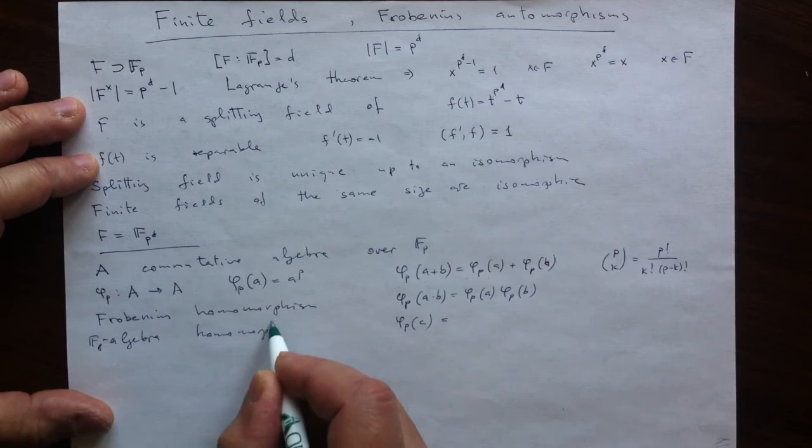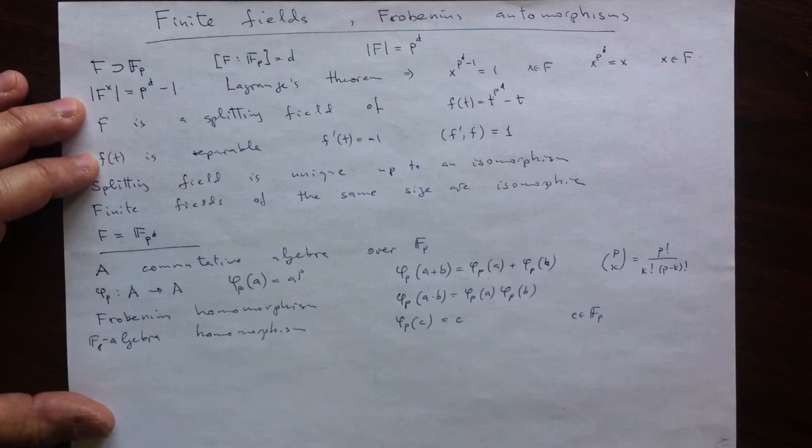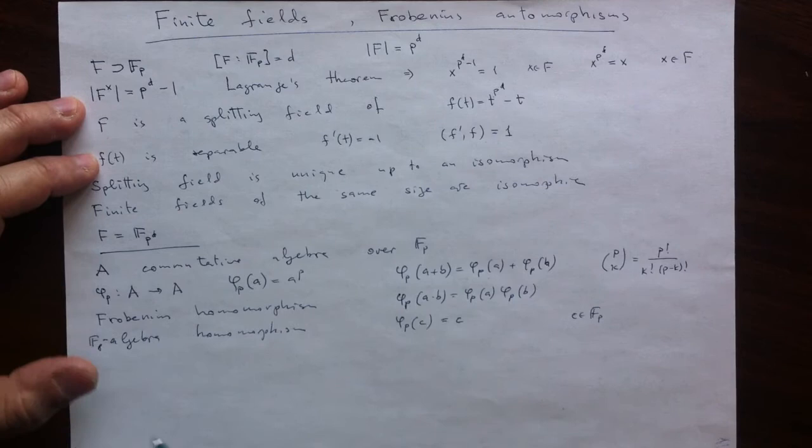And the last thing to observe is this is an algebra homomorphism, meaning that the scalars, elements of the integers mod p, are fixed. And that is because Fermat's Little Theorem, that is just the exact statement. The pth power of any integer mod p is congruent to the integer. So we have this general construction of Frobenius homomorphism.